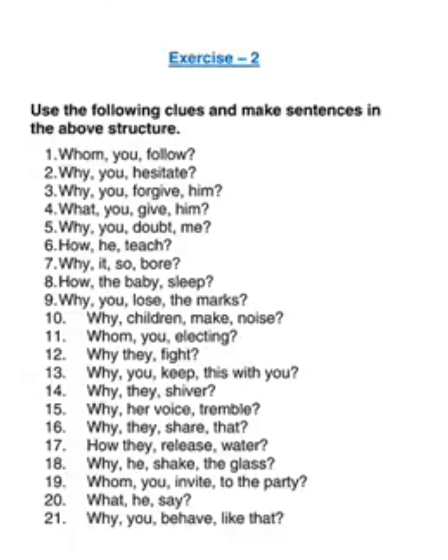Why are you hesitating? Why are you forgiving him? What are you giving him? Fifth one: Why are you doubting me? Sixth one: How is he teaching? Here you have he, so you have is. Seventh one — with it, you have is: Why is it so boring? Eighth one: How is the baby sleeping? Ninth one: Why are you losing the marks?